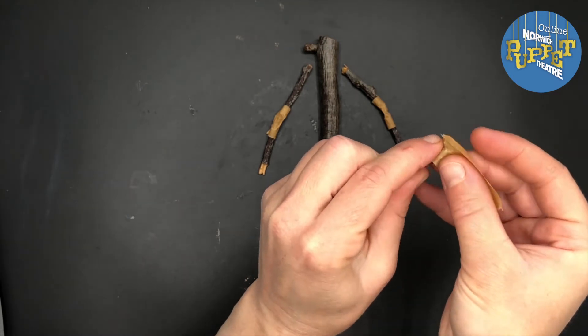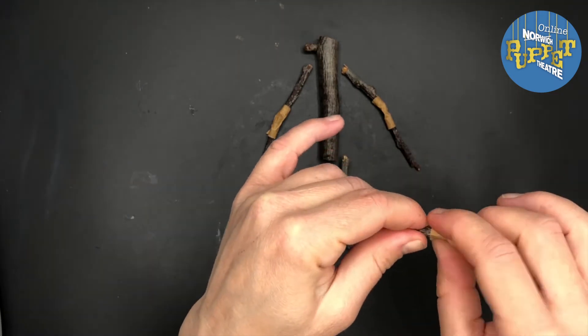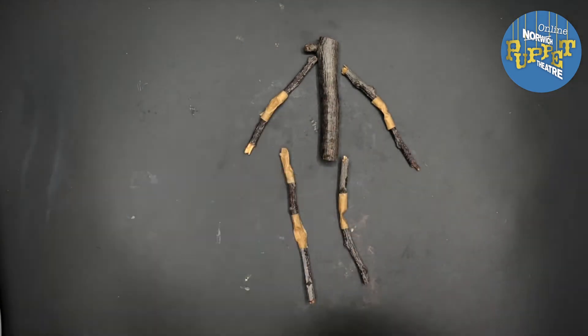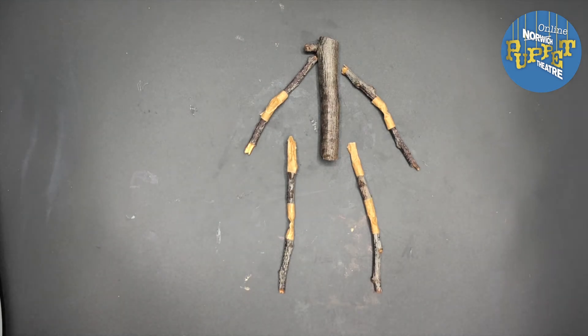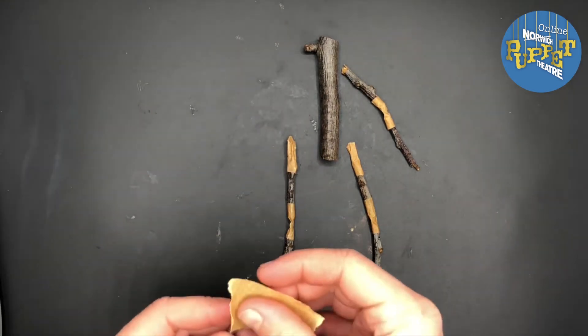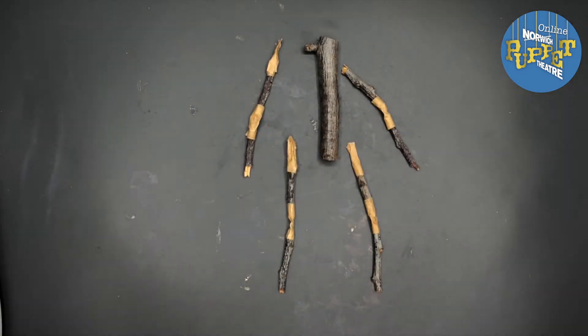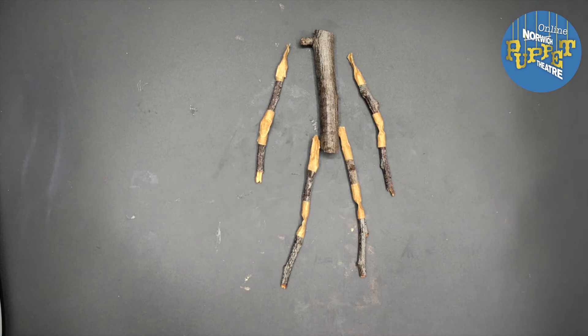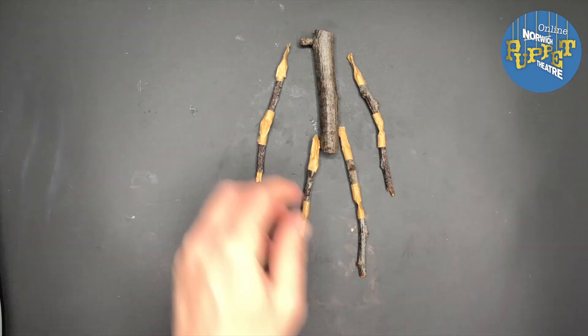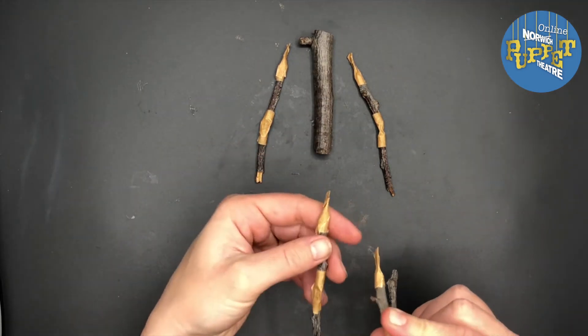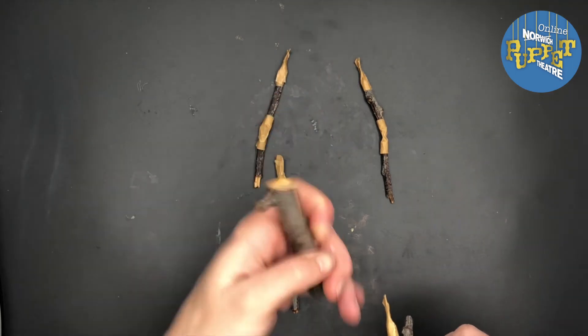Now for the bits, the top of the legs where it attaches to the hips, I'm going to take another piece of tape and I'm going to tape it onto the end of the stick and go around, so that then I have a tab of tape stuck onto the stick. I'll do that with all of my arms and legs, so where it will join to the hips and where it will join to the shoulders.